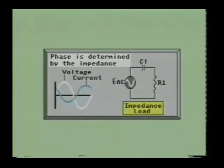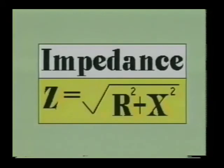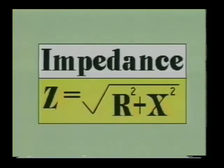If the circuit contains a combination of resistance, capacitance, and/or inductance, a wide variety of phase relationships may result. The amount of phase difference will be determined by the amount of reactance and resistance in the circuit. This is also called the circuit's impedance. Impedance is the total opposition that a circuit offers to the flow of alternating current at a given frequency. Impedance is measured in ohms and its symbol is the Greek letter Z. Impedance is equal to the square root of the resistance squared plus the reactance squared for a typical series AC circuit.